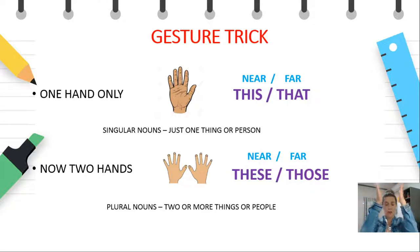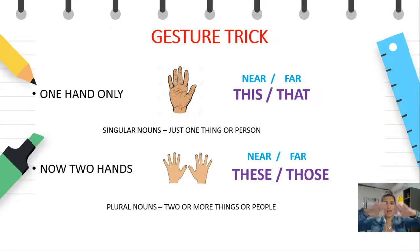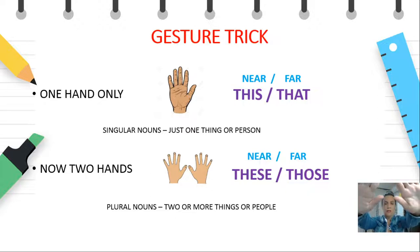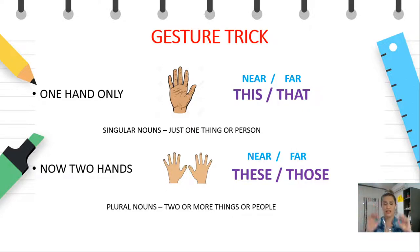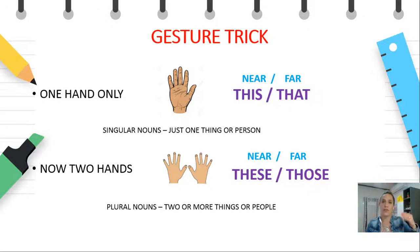What about 'these' and 'those'? I will need your two hands now. We say 'these' — close to us — and 'those' — far. For example: these apples near to me, those cars far from me, these jackets near to me, those people far from me. So whenever you're in doubt, you can always use this gesture trick. One hand equals singular: this apple, that apple. Two hands equals plural: these apples, those apples.